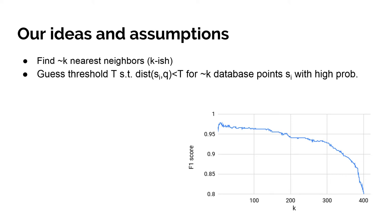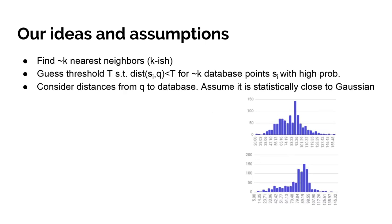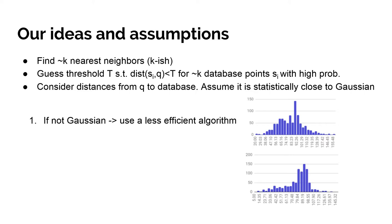Our second idea is that it is much easier to guess a threshold T such that there are approximately K points with distances smaller than T with high probability. For each point, we can homomorphically compare T with the distance from the query and decide homomorphically whether to consider it as a neighbor or not. Guessing a good enough threshold T is more efficient than exactly computing the K nearest neighbors, and even more efficient if the distances are close to Gaussian distribution.